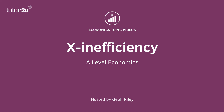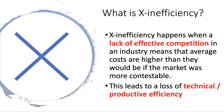Welcome to this micro video revision topic. Let's spend a couple of minutes looking at the concept of X-inefficiency. X-inefficiency was first mentioned by the economist Harvey Liebenstein in the mid-1960s, and we typically use the term when analyzing cost in imperfectly competitive markets such as monopoly, duopoly, and oligopoly.